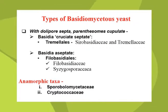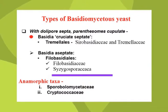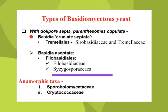In the next major group, where dolipore septa are present in the hyphal state, there are two subgroups. In one subgroup, basidia are cruciate septate, which includes only one order, Tremellales, with the families Sirobasidiaceae and Tremellaceae.